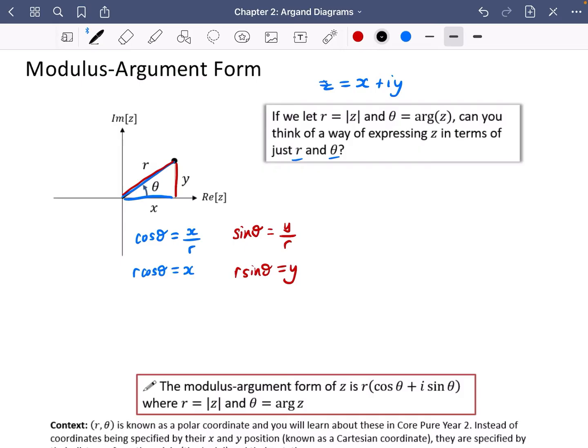This means that if z is equal to x plus iy, I can take x and replace it with r cos theta, and I can take y and replace it with r sine theta. Then I can factorize out the r that's in both of them. So z is equal to r(cos theta + i sine theta). This is the modulus argument form, sometimes called the mod arg form if it's being written in shorthand.